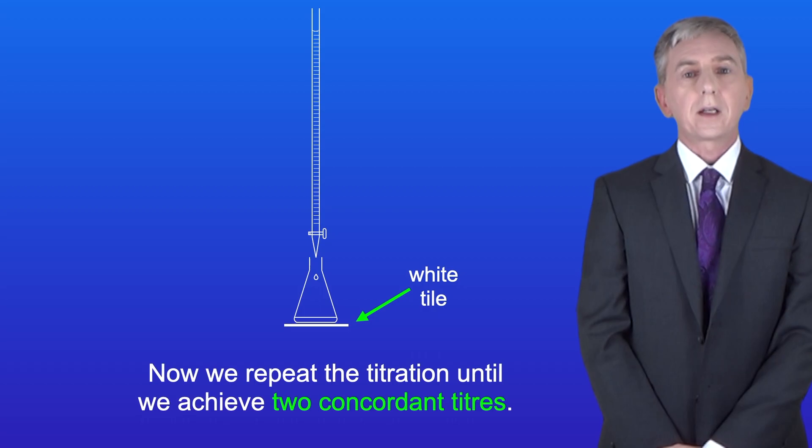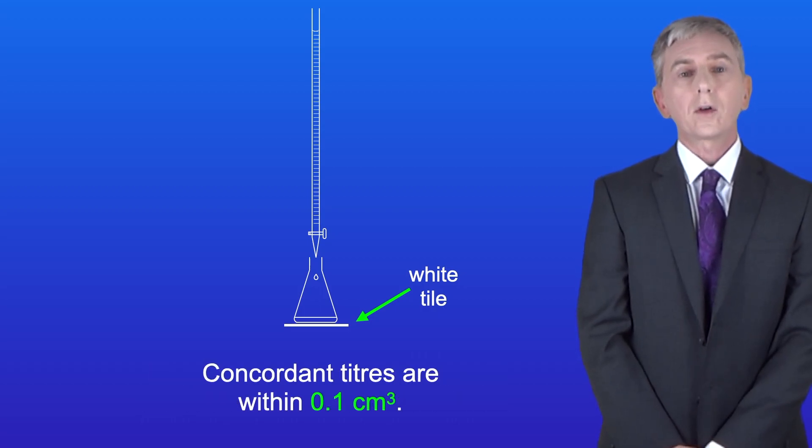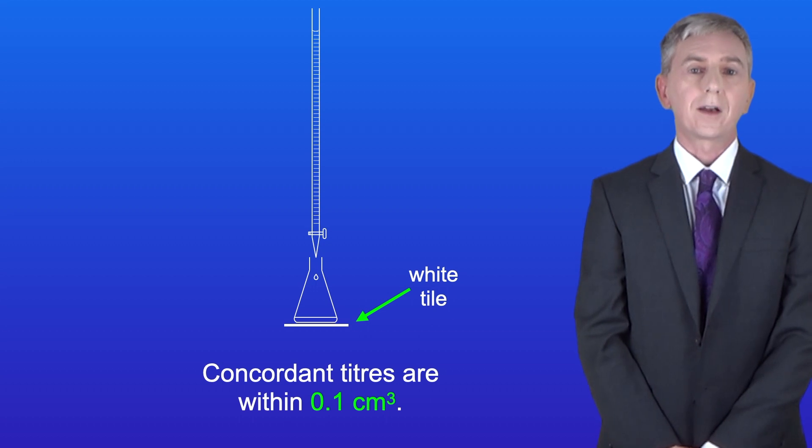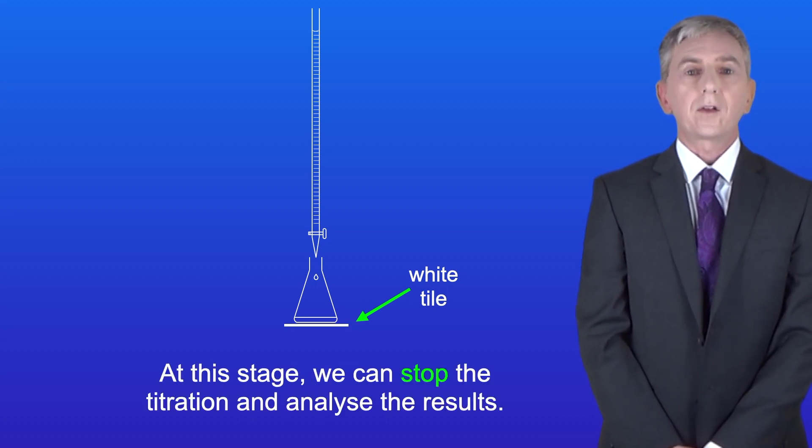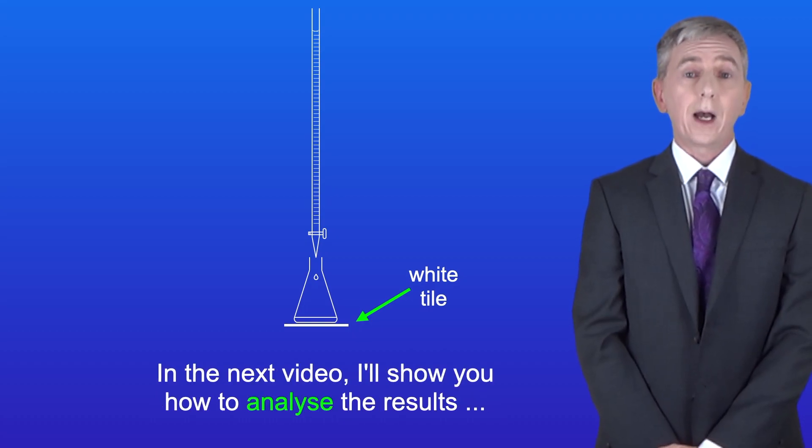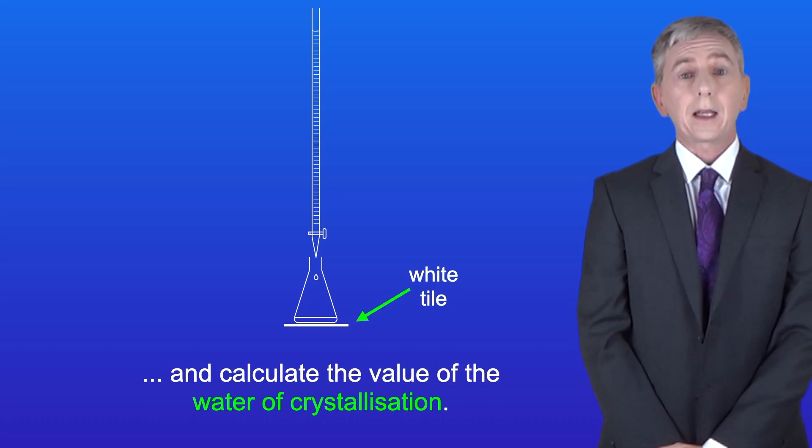Now we repeat the titration until we achieve two concordant titers. Concordant titers are within 0.1 centimeters cubed. At this stage, we can stop the titration and analyze the results. In the next video, I'll show you how to analyze the results and calculate the value of the water of crystallization.